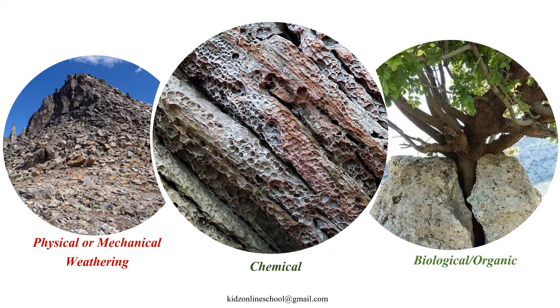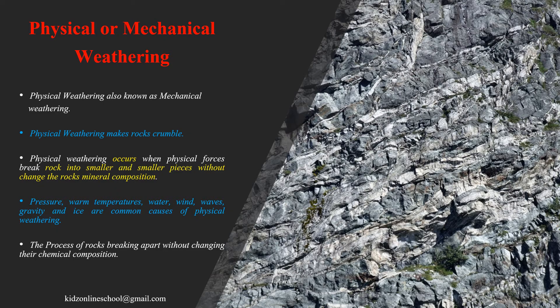In this slide, you can see the pictures of physical, chemical, and biological weathering. Now we are going to know about physical weathering. Physical weathering is also known as mechanical weathering. Physical weathering makes rocks crumble. Physical weathering occurs when physical forces break rocks into smaller and smaller pieces without changing the rock mineral's composition.